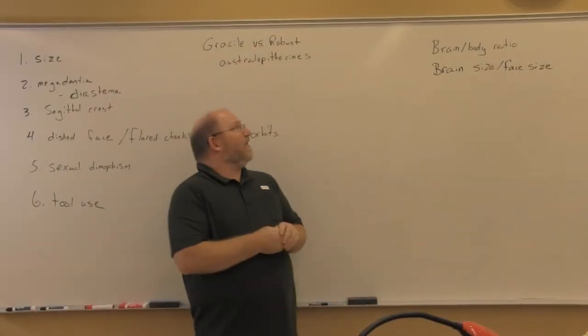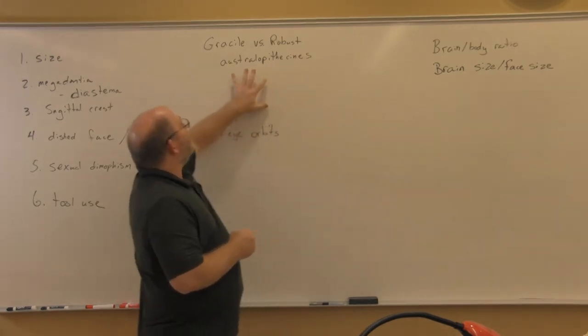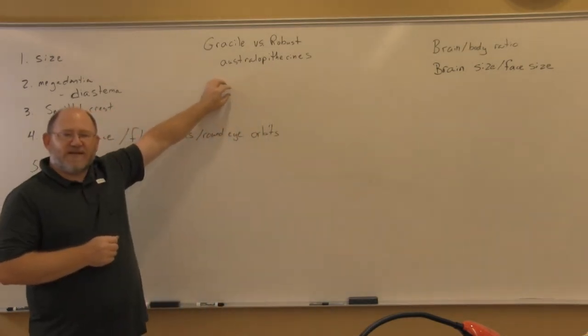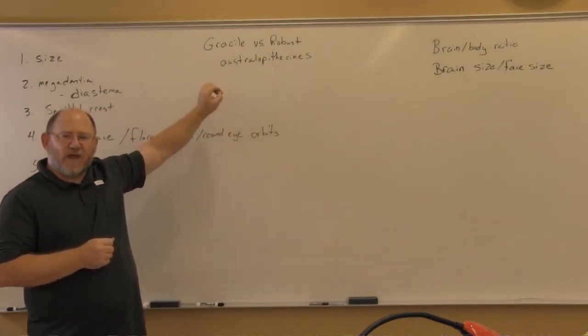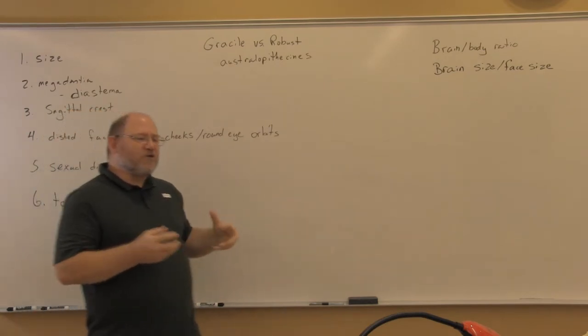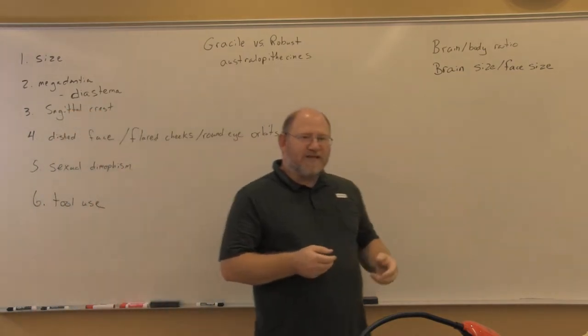In this mini lecture, we're going to talk about australopithecines, and there are two categories: gracile versus robust.